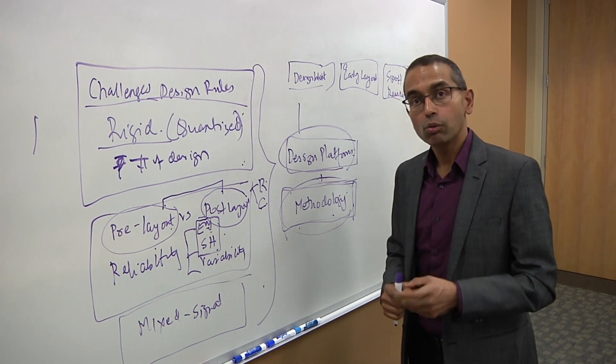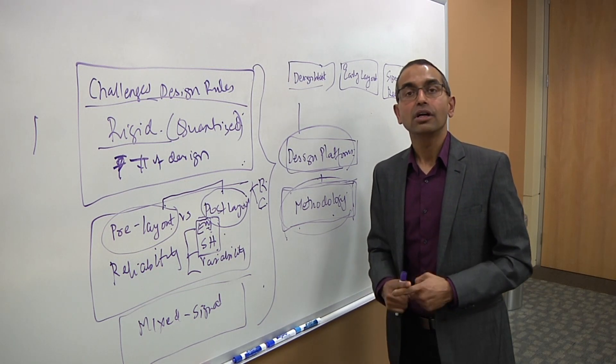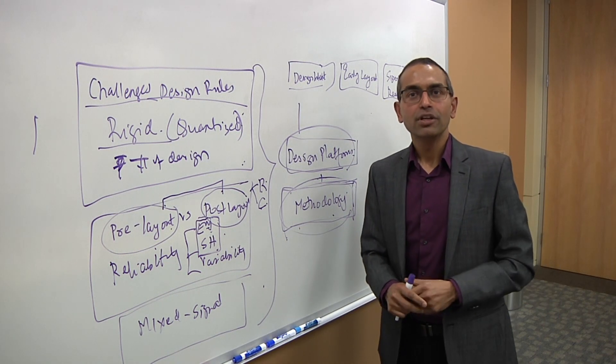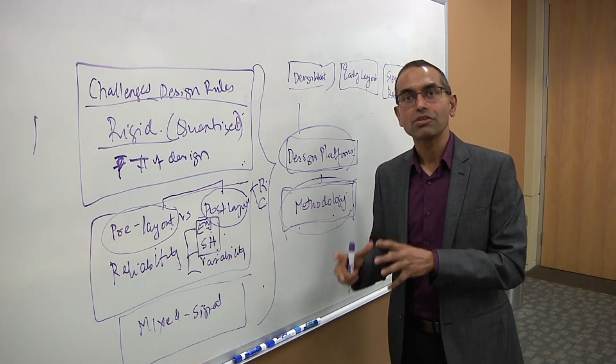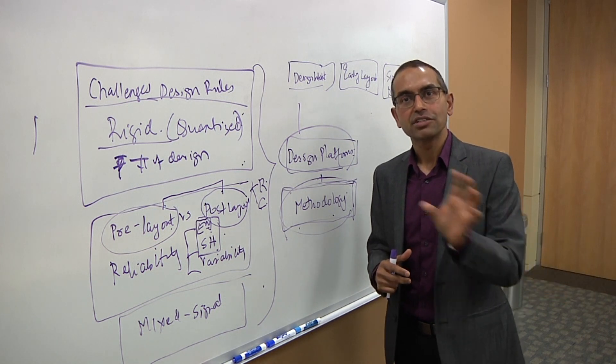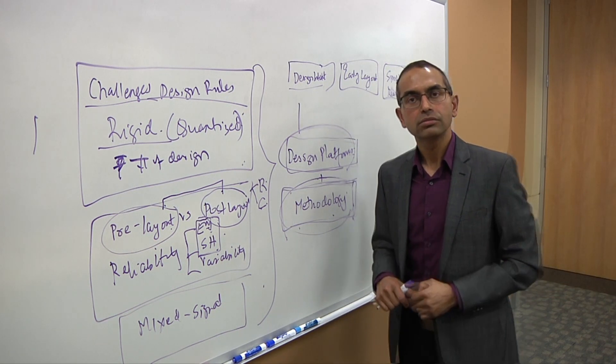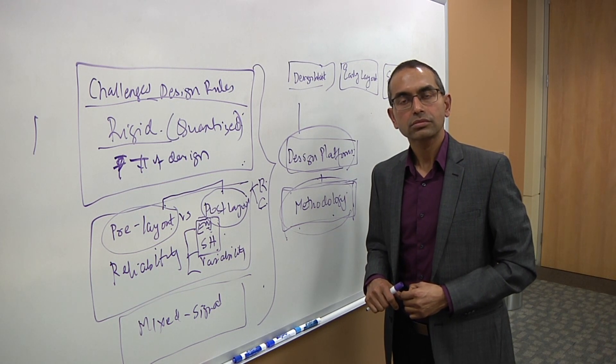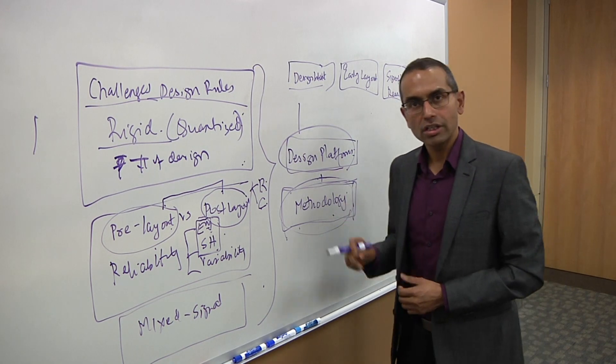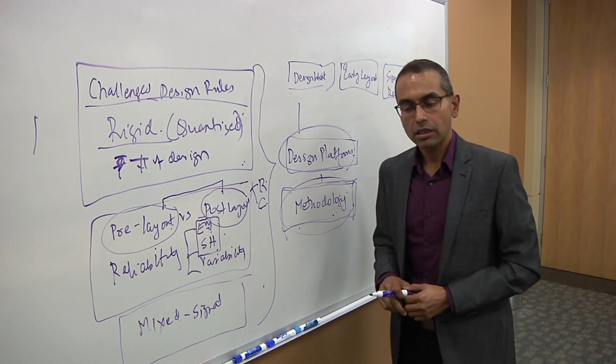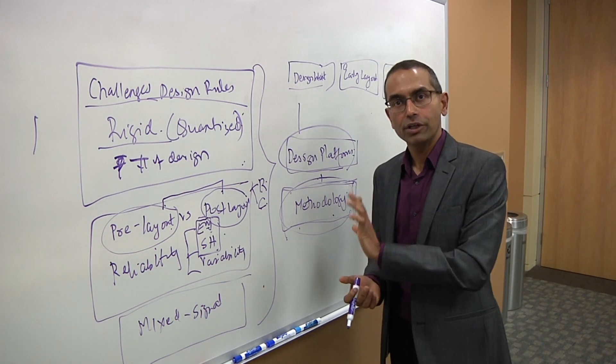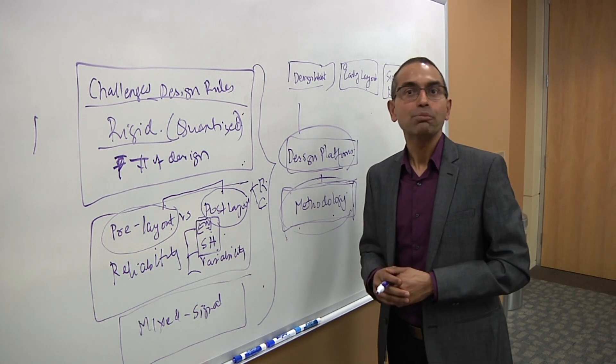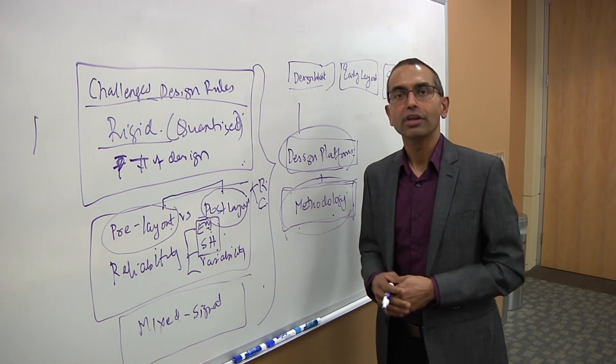One of the key things we did was we integrated our sign-off tools—StarRC, ICV, CustomSim—as part of our design platform, so that you see the consistency in the result in the planning stage, in the implementation stage, and the sign-off stage. Is there a way to modularize that methodology so you can shift into smaller batches and new designs pretty regularly? The methodology itself, even though it's customized for a particular technology node or specific end application, it's sufficiently portable that you can reuse it for different applications.